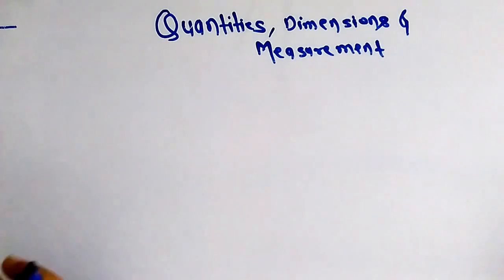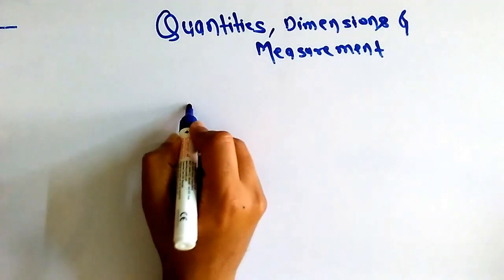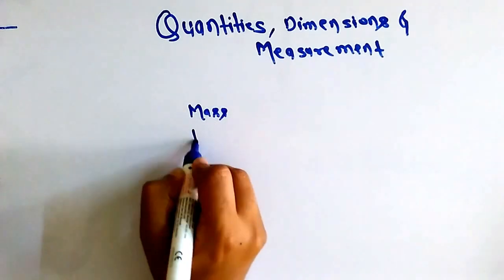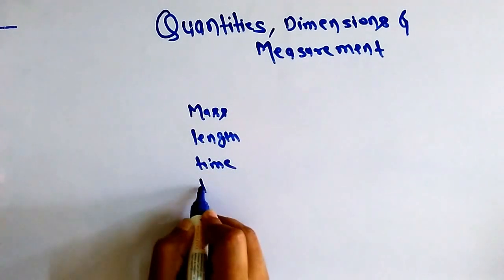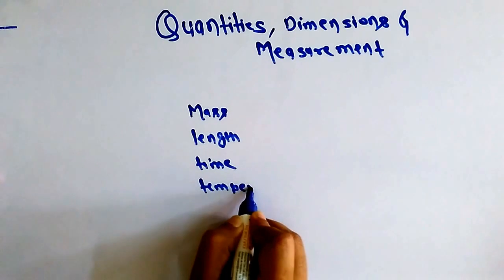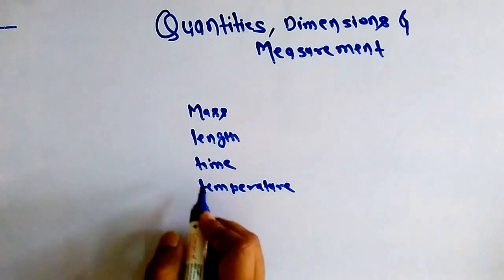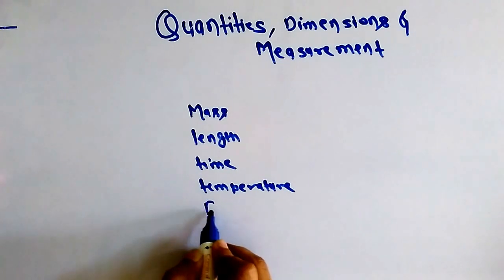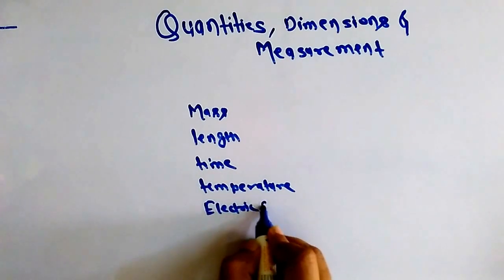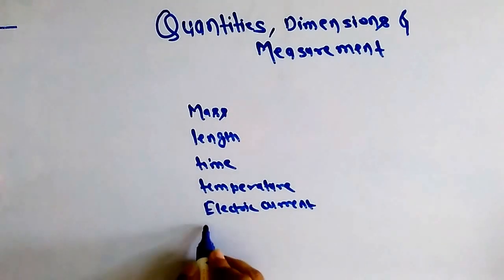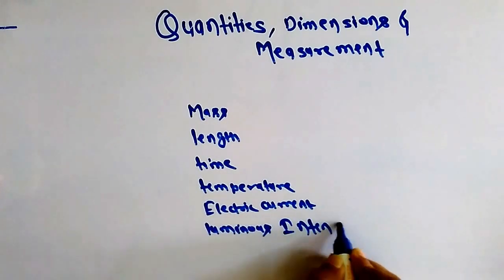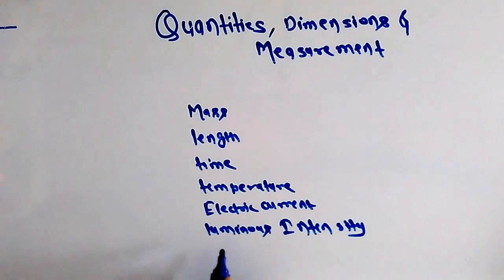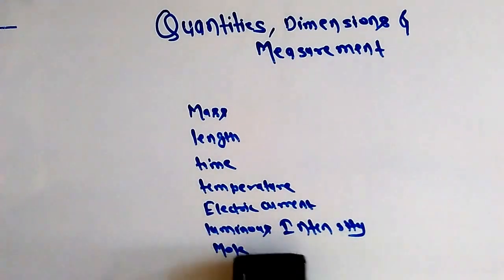There are seven fundamental quantities: mass, length, time, temperature, electric current, luminous intensity, and the last one is the amount of substance. All of these have their SI units.